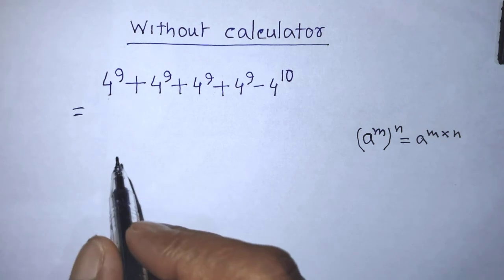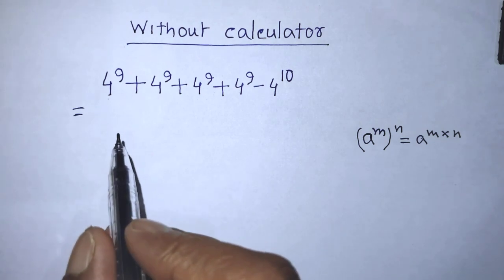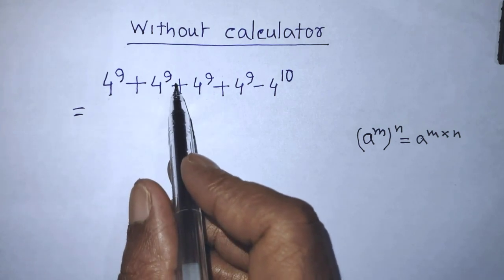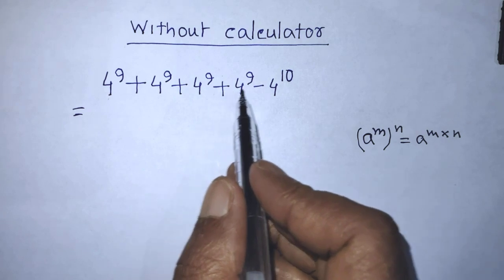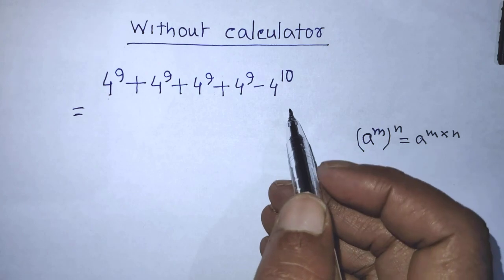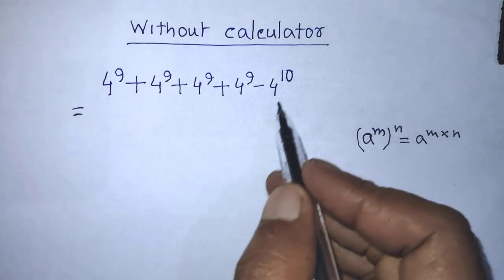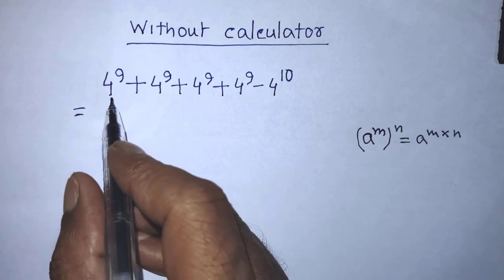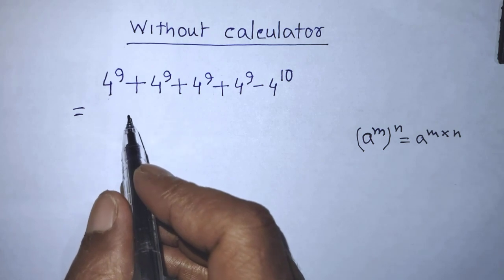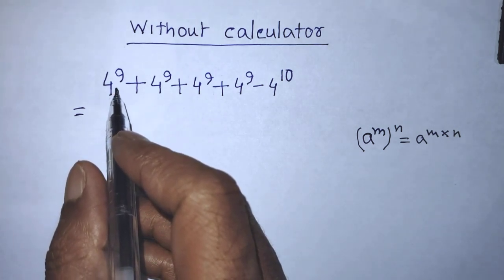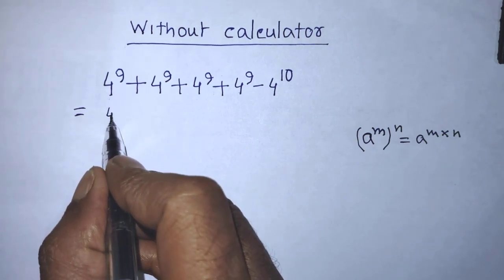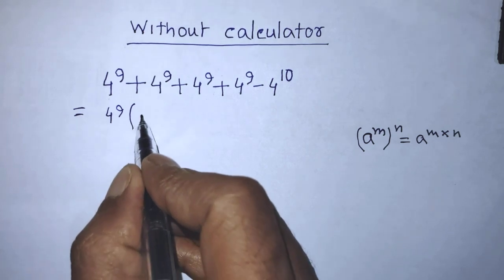Our given algebraic expression is 4 to the power 9, plus 4 to the power 9, plus 4 to the power 9, plus 4 to the power 9, minus 4 to the power 10. The first, second, third, and fourth terms are the same, so we can take 4 to the power 9 as common from the first four terms.